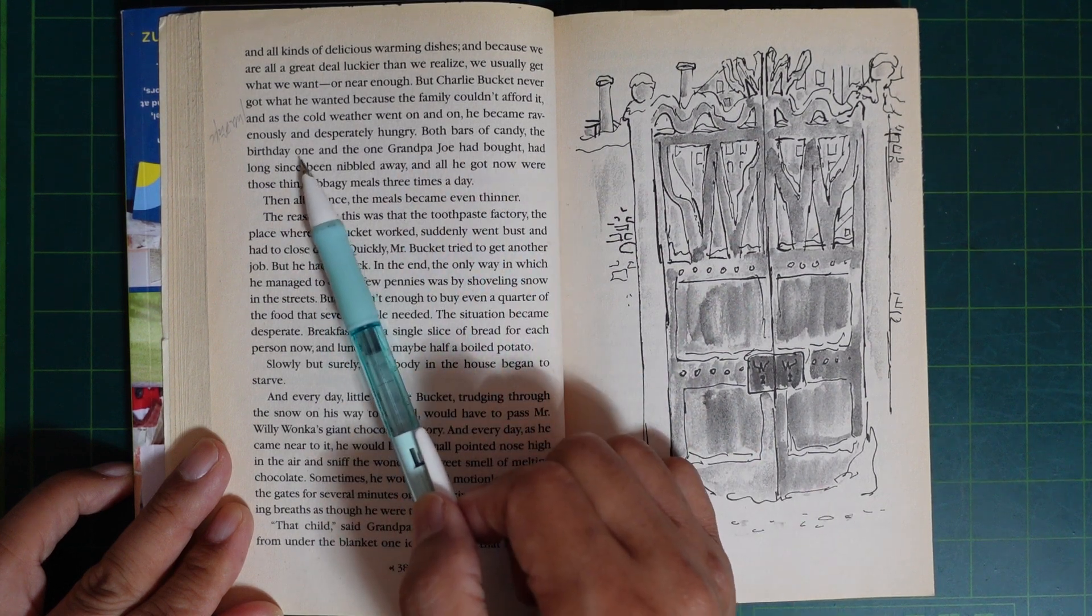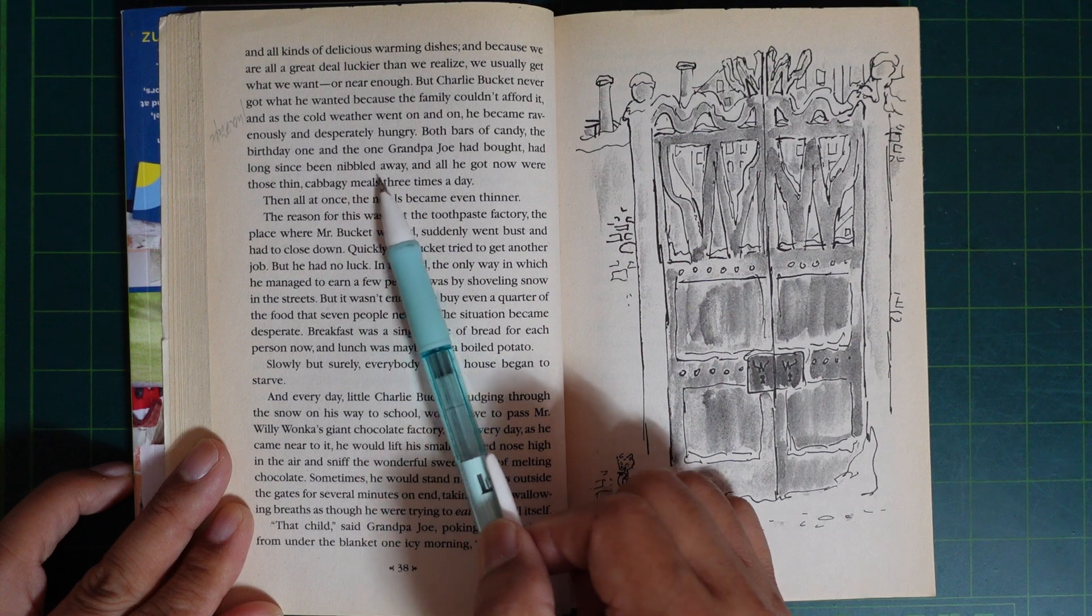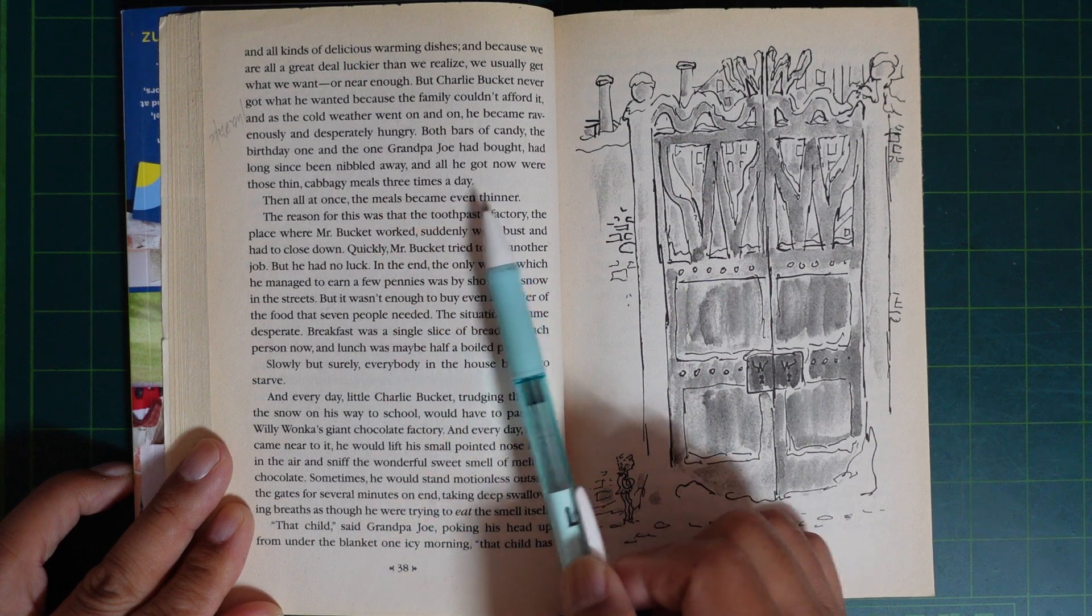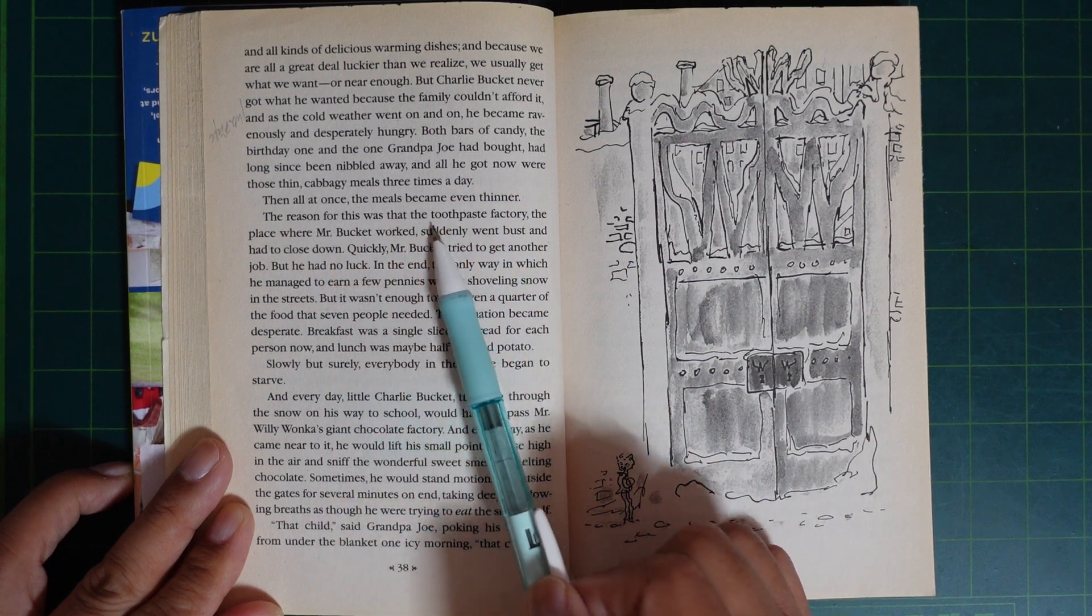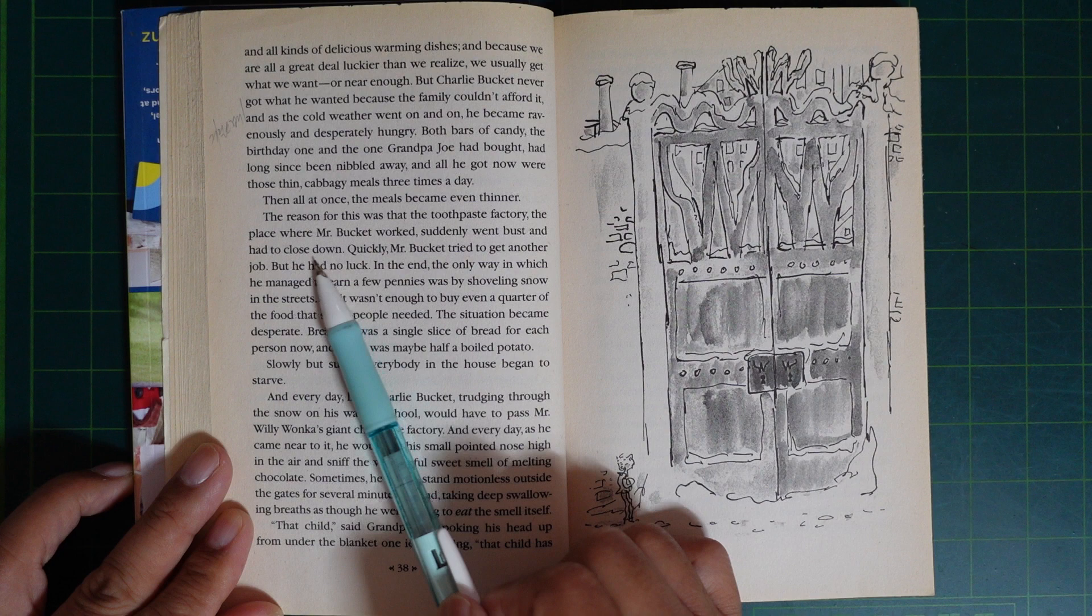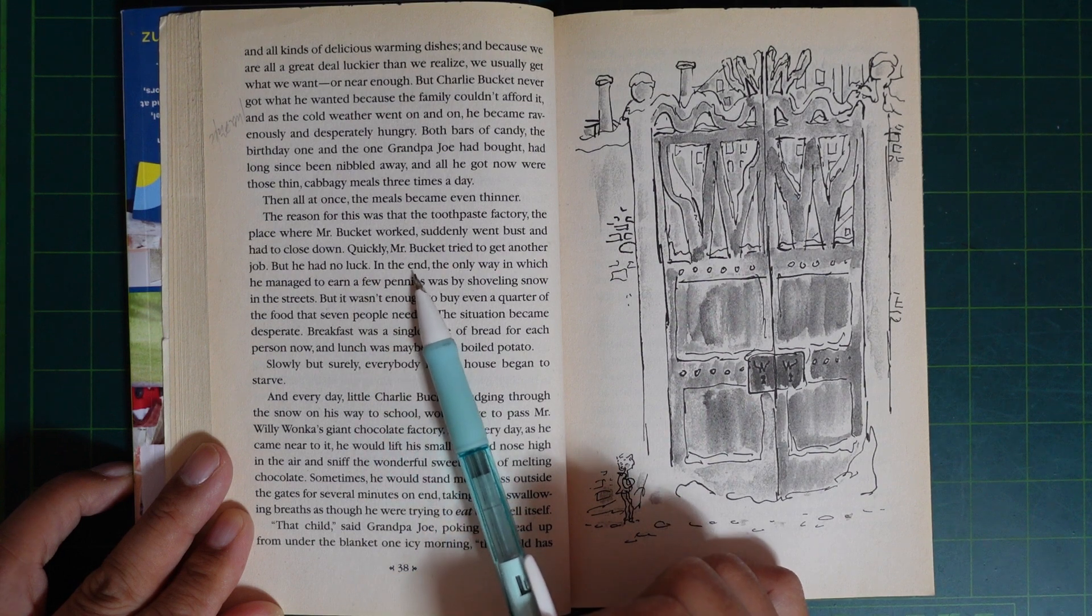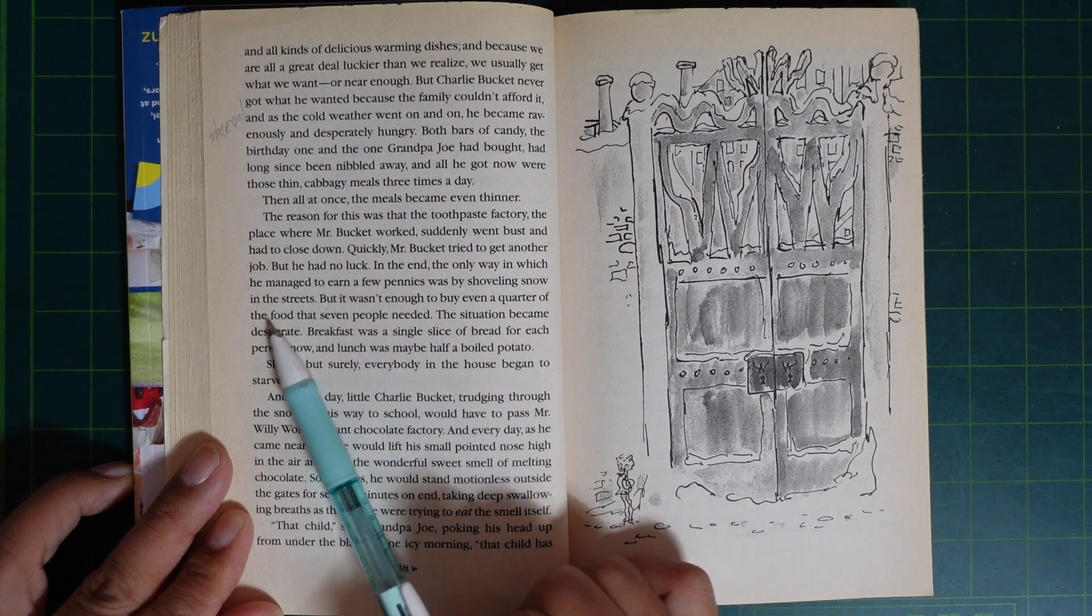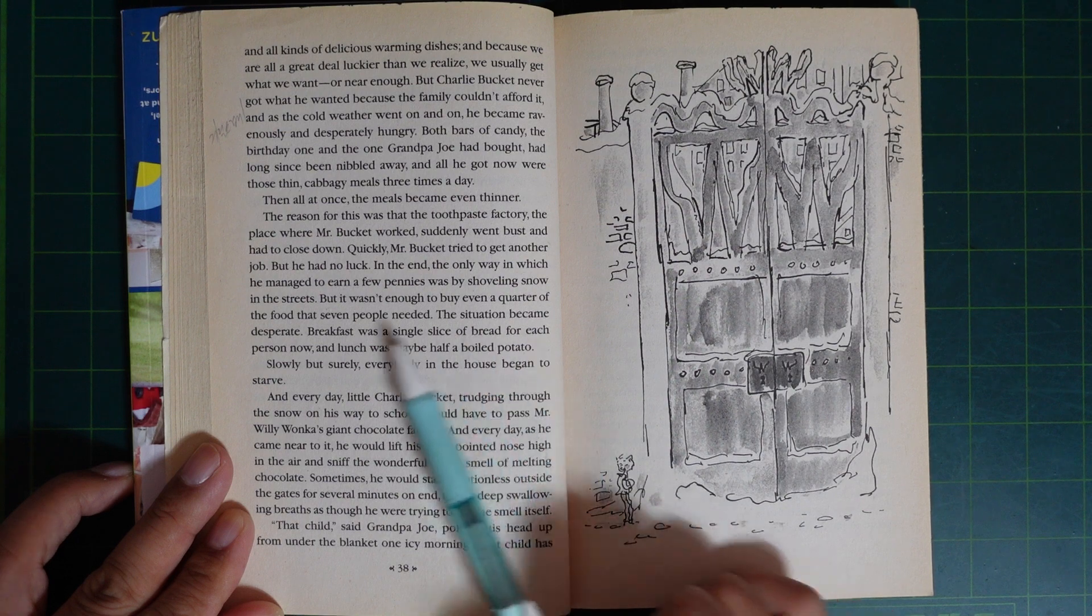Both bars of candy, the one on his birthday and the one Grandpa Joe had bought, had long since been nibbled away, and all he got now were those thin cabbage soups three times a day. Then all at once, the meals became even thinner. The reason for this was that the toothpaste factory, the place where Mr. Bucket worked, suddenly went bust and had to close down. Quickly, Mr. Bucket tried to get another job, but he had no luck. In the end, the only way in which he managed to earn a few pennies was by shoveling snow in the streets.